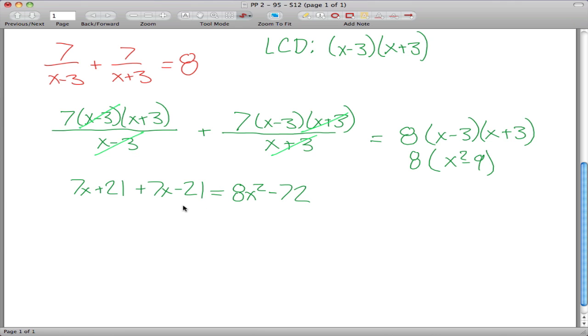So to solve this equation, what we want to do is get everything over to one side. Plus 21 and minus 21 will cancel each other out, so seven X and seven X gives us 14 X, which we can subtract over to this side and get eight X squared minus 14 X minus 72 equals zero.